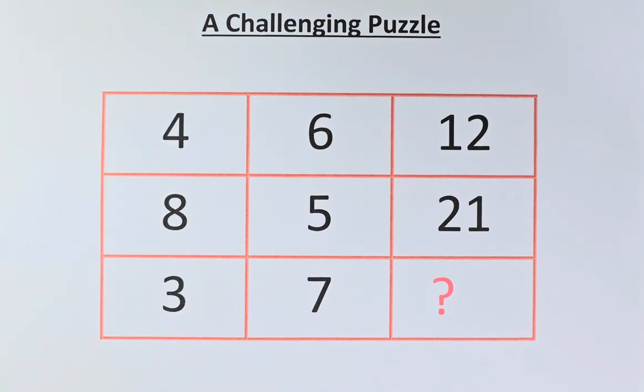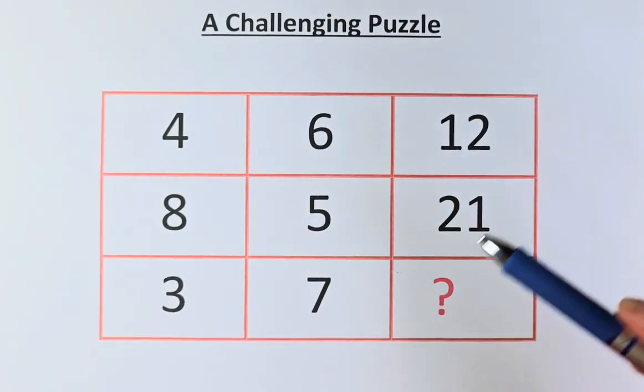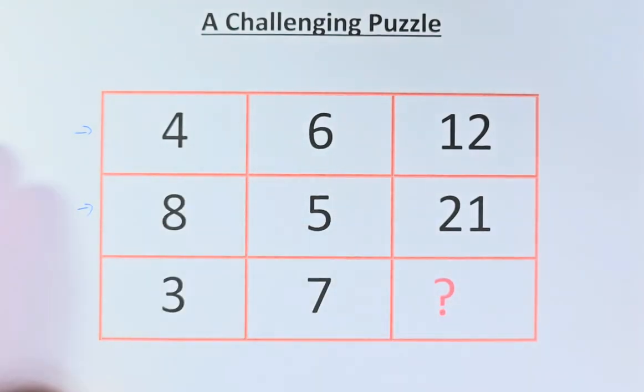As usual, we need to know what number represents the question mark. So without further ado, let's try to solve this puzzle. If you look at the column, 4, 8, 3, 6, 5, 7, 12, 21 and a question mark, it is quite impossible to solve. So we are going to solve in terms of rows. The answer will be in terms of rows.